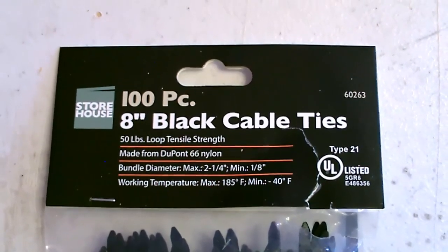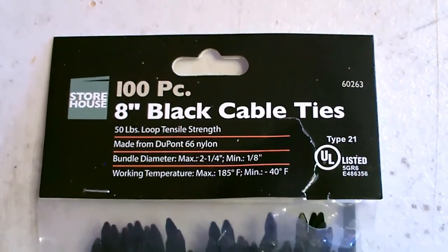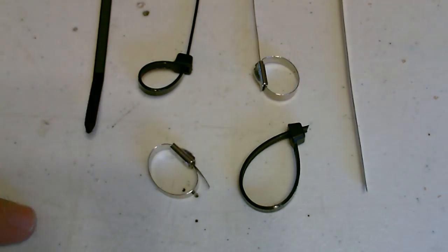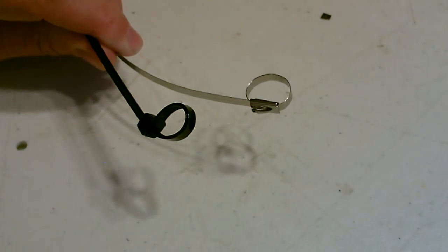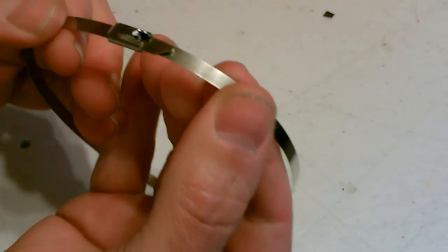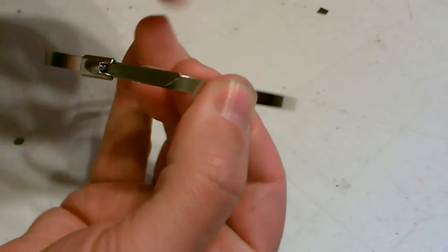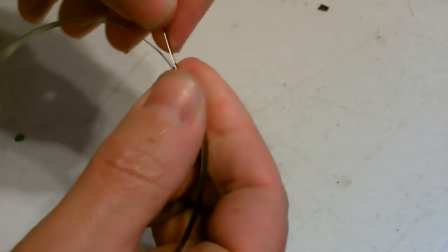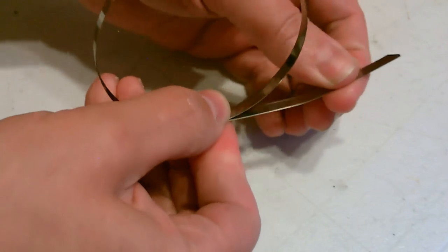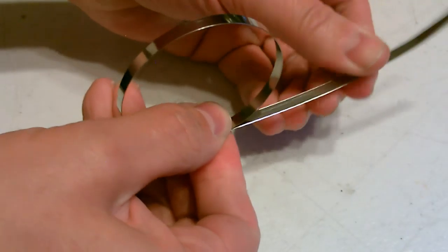Okay, now compare that to the standard nylon ones. Just 50 pounds and 185 Fahrenheit, so these are a lot better. These are so much better it's unreal. And these work just like your standard zip tie. You just slide it through like this and it smoothly sets at any level. You can set it there and it won't slide back.